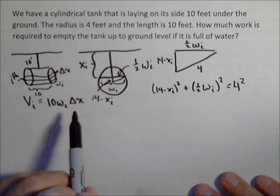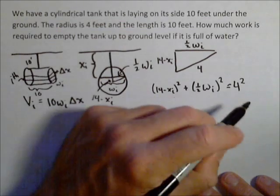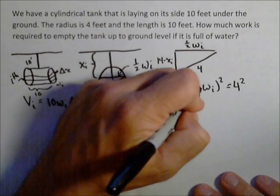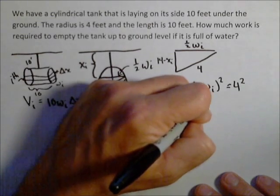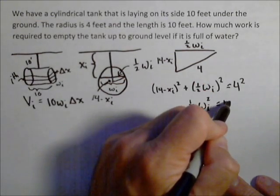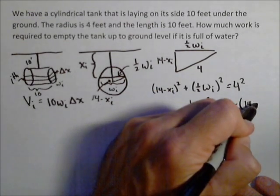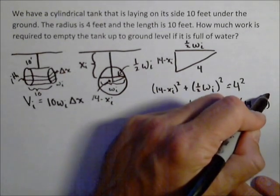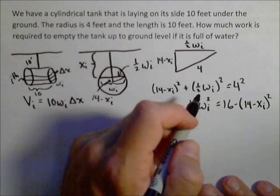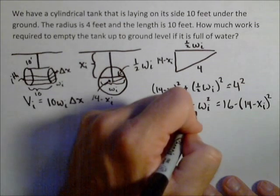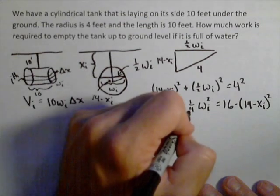And now what I wanted to do was sub out w and sub in x sub i. So I'm going to move this to the other side, and I do want to square both of these. So I have one fourth w sub i squared equals 16 minus (14 minus x sub i) the quantity squared. I'm not going to worry about multiplying this out right now. I'll take care of it in my integral. Last thing I've got to do is multiply through by 4 and then take this square root, or actually we could go ahead and take the square root now.